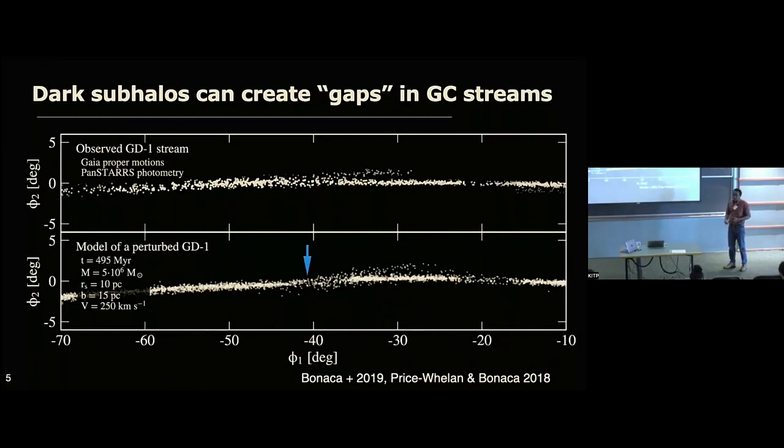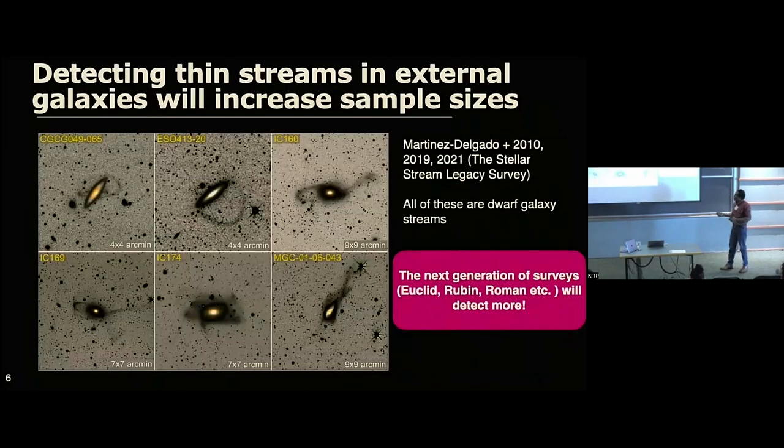The question is, we want to go beyond the Milky Way because we only have 100 streams in the Milky Way. And only, I think, a few of them have gaps. So we want to actually increase the sample sizes. So to do that, we just go into other galaxies, starting with Andromeda. So in other galaxies, people have seen streams. So they have this type of features here. I'm sharing some examples of that from the Stellar Stream Legacy Survey. You can see some of these, most of these are dwarf galaxy streams that, again, dwarf galaxies being torn up. But Roman, Euclid, and Rubin will detect more of these. So our goal, again, is to go after these with Roman.